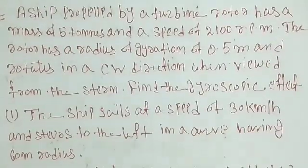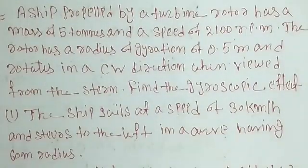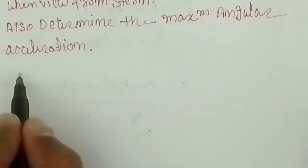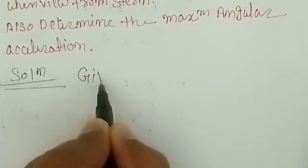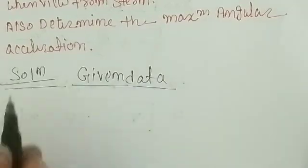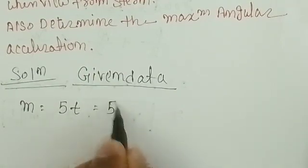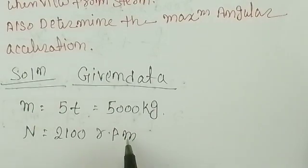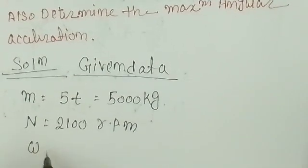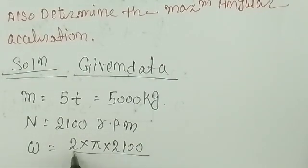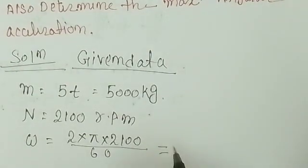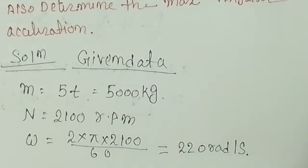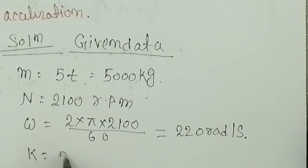First, we find the gyroscopic couple. The gyroscopic couple in case of steering is C = I·ω·ω_P. We calculate the mass moment of inertia and angular velocity of precession. Given data: mass M = 5 ton = 5000 kg, speed N = 2100 RPM. From this, angular velocity ω = 2πN/60 = 2π × 2100/60 = 220 radian per second. Radius of gyration K = 0.5 meter.